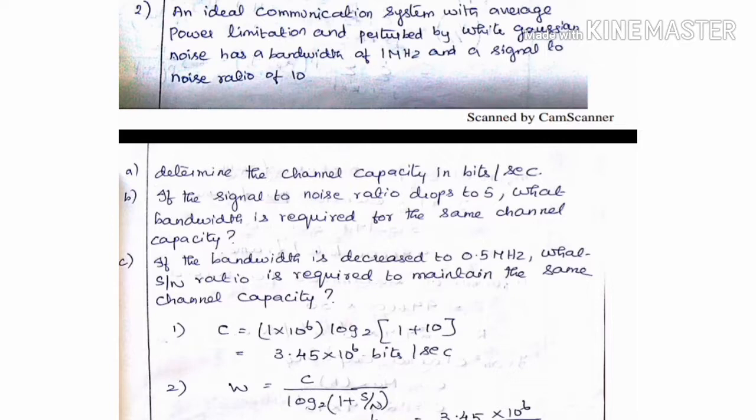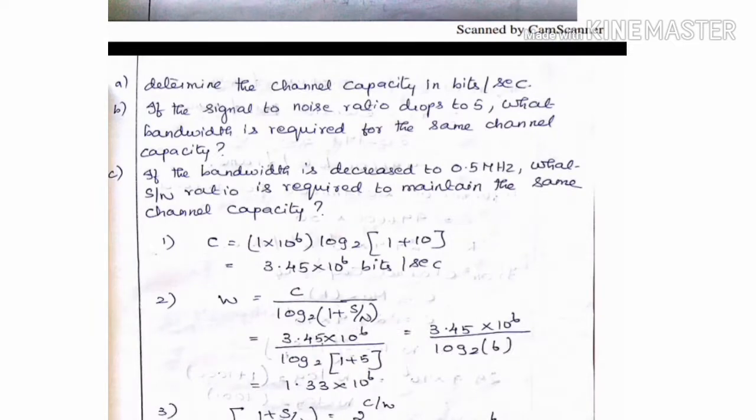Now the C value is 3.45 into 10 to the power 6 bits per second. Using this with the new bandwidth of 0.5 MHz, log to the base 2 of 1 plus S by N gives an S by N value, and the answer is 1.33 into 10 to the power 6.